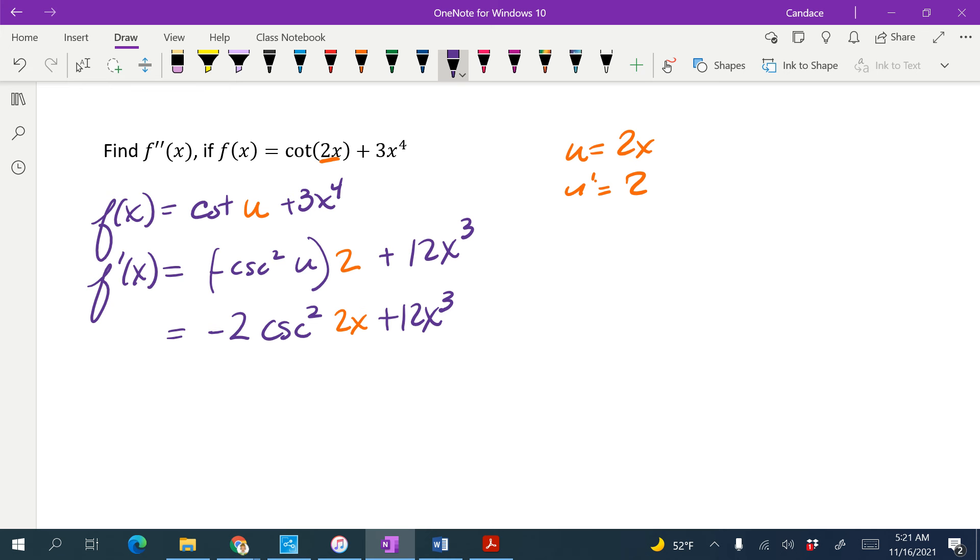Now I've got to take the derivative of that. So my u happens to be the same, so I'm actually just going to go back to it being u. And then we're going to take the derivative of this again. In fact, I am going to rewrite it because we have a double chain rule now. So this is going to be negative 2 times the cosecant of u squared plus 12x cubed.